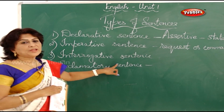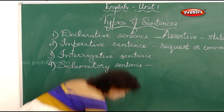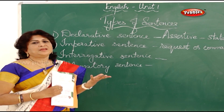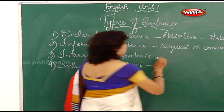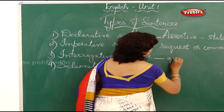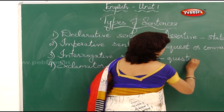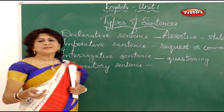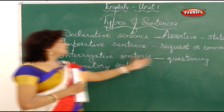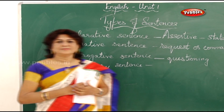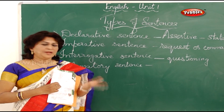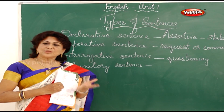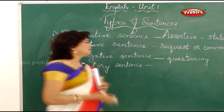An interrogative sentence — when you say interrogate, that means question — so it is a questioning sentence. Examples include: 'what is your name,' 'where do you live,' 'have you had breakfast today,' 'when is the school closing for holidays.' All these are questioning sentences.